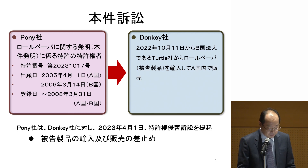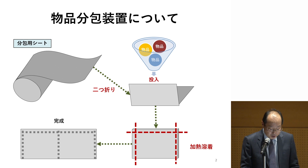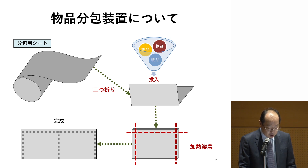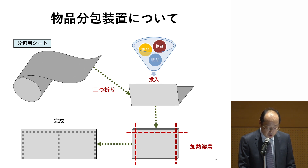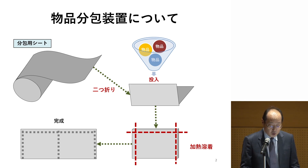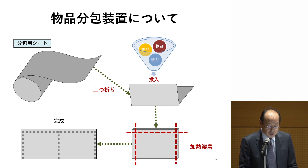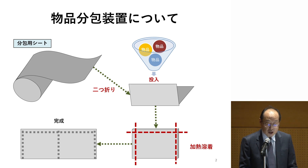The technical premise of this case is as follows. This invention relates to roll paper that is used in an article packaging device. The packaging process involves drawing out a heat-sealable packaging sheet and folding it in two. The articles are then placed on the sheet, wrapped, and sealed by heat fusing to create smaller individual packages. This device is typically used for packaging powdered medicines and other pharmaceuticals. This slide shows only one or two of these smaller packages for the sake of clarity.